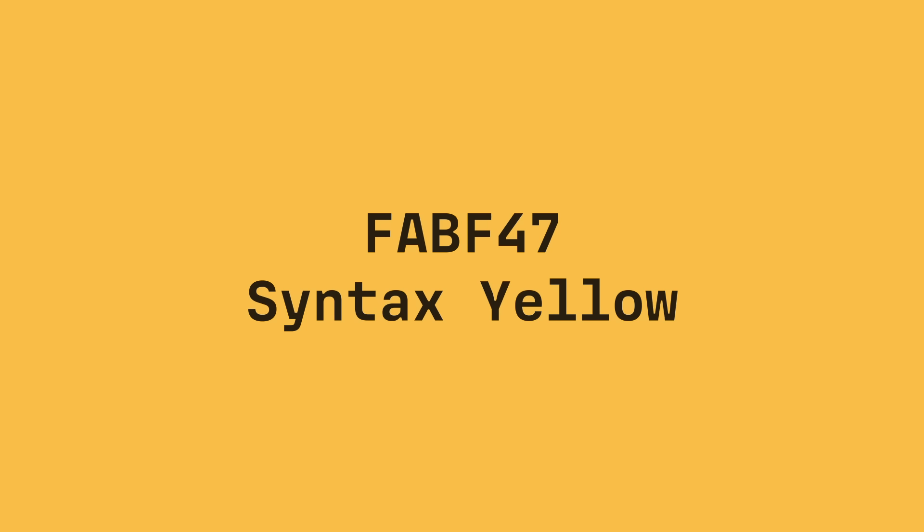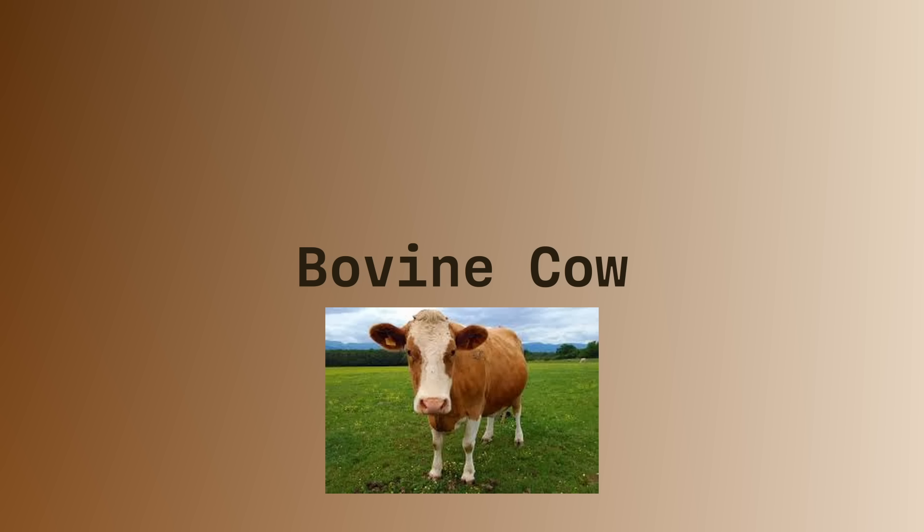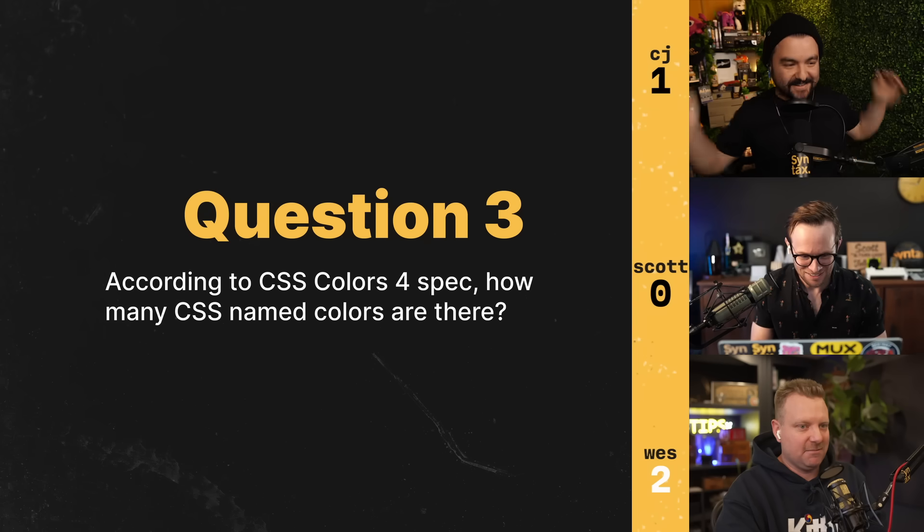I figured they would have added some more by now. They should have some fun ones — we already have Papaya Whip. If you were to add a color to CSS, what would you add? Syntax Yellow — definitely Syntax Yellow. Or what if we could have named gradients, like "bovine cow" or something. We need to petition to get Syntax Yellow in there. CJ gets the point on that one — he was closer without going over.